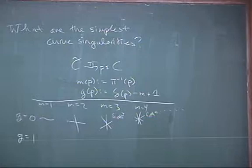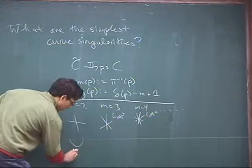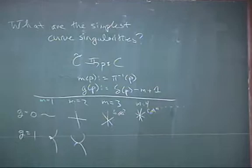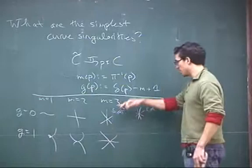For G equals 1 with one branch we have the cusp — Y² = X³. For M equals 2 we have the tac node, Y² = X⁴. And for M equals 3 we have the planar triple point — not three transverse coordinate axes in A³, but rather just three lines in A².